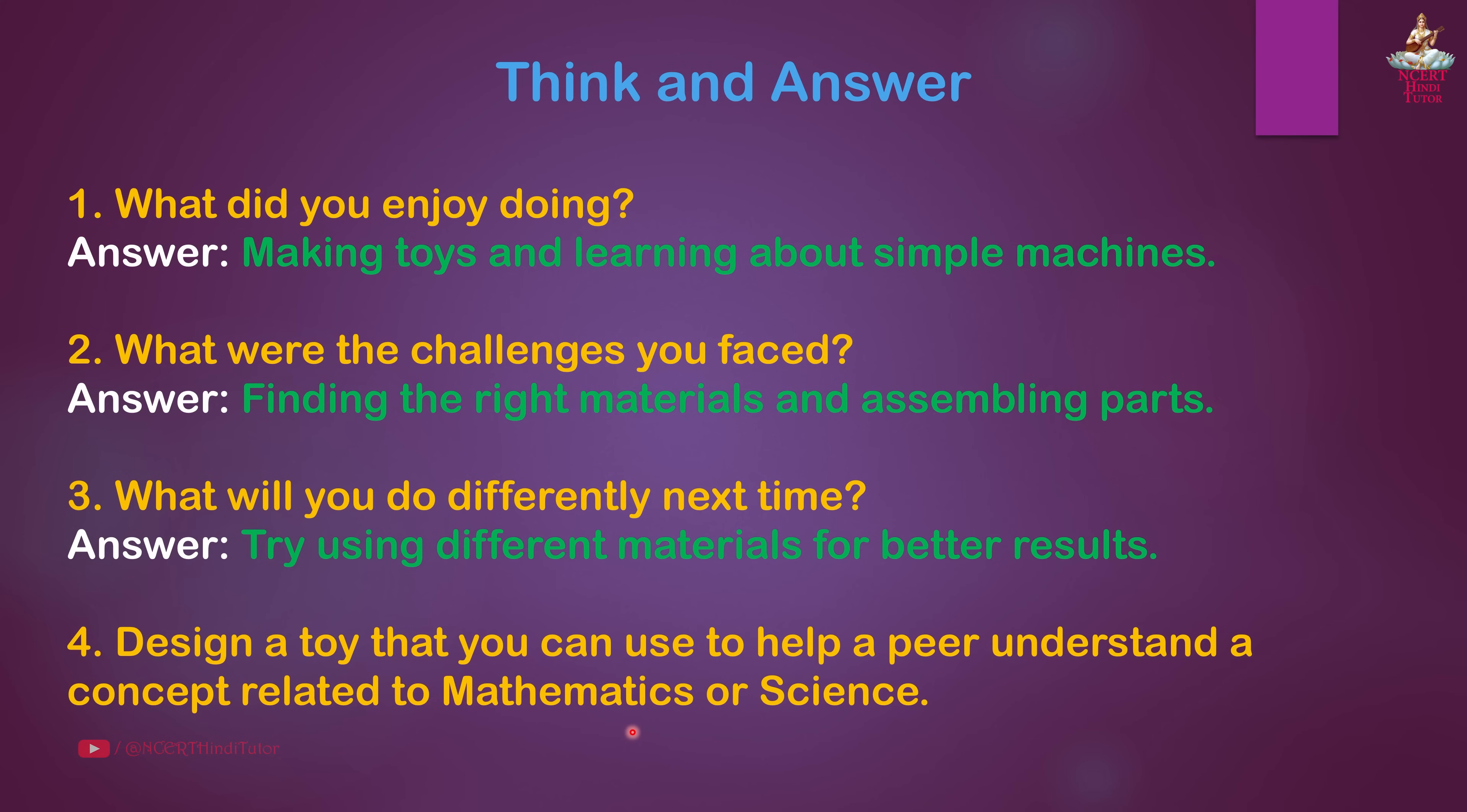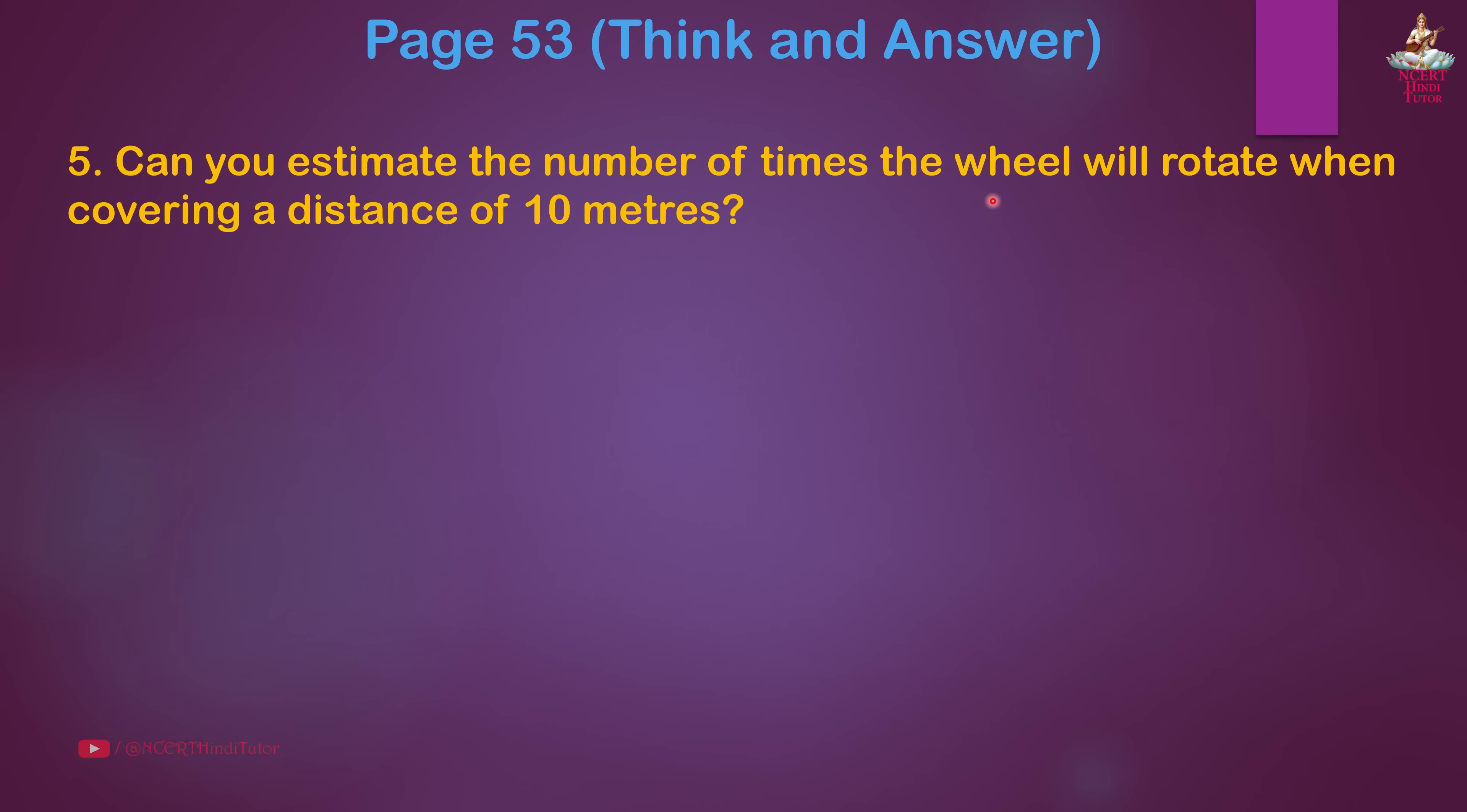Question 4: Design a toy that you can use to help a peer understand a concept related to mathematics or science. Answer: A pulley system to show force and motion. Question 5: Can you estimate the number of times the wheel will rotate when covering a distance of 10 meters? Answer: Calculate using the wheel circumference. Friends, circumference is equals to 2 pi r. Suppose r is equals to 7 centimeter. Then circumference is equals to 2 multiplied by 22 by 7 multiplied by 7. We get 44 centimeter. Then number of times wheel rotate is equals to 10 multiplied by 100, we have to change meter into centimeter. So 1 meter is equals to 100 centimeters. So we write here 100 divided by circumference, that is 44, is equals to 22.7.